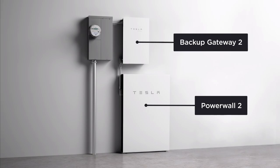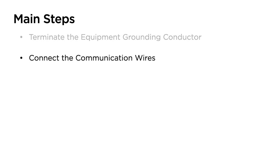This video explores wiring Powerwall 2 paired with Backup Gateway 2. After accessing the wiring compartment, we will terminate the equipment grounding conductor, connect communication wires, terminate the AC conductors, and reinstall covers to complete the installation.